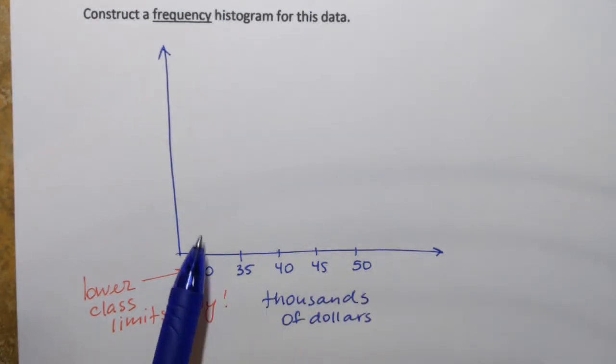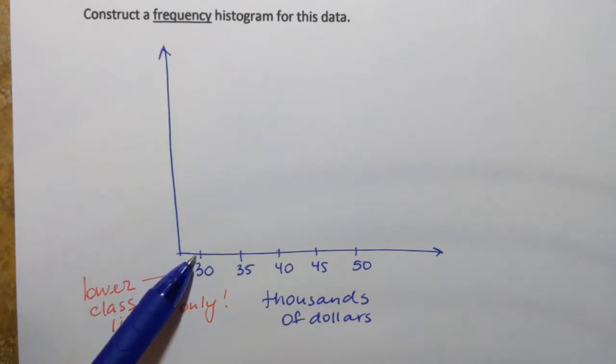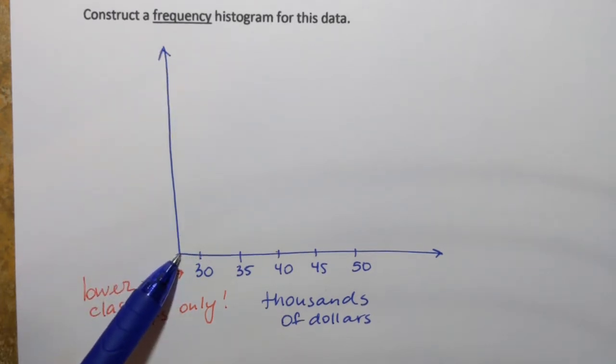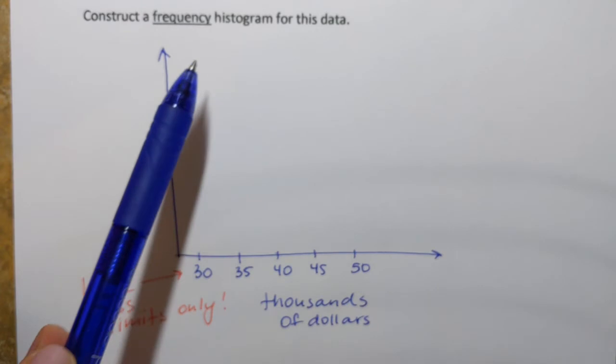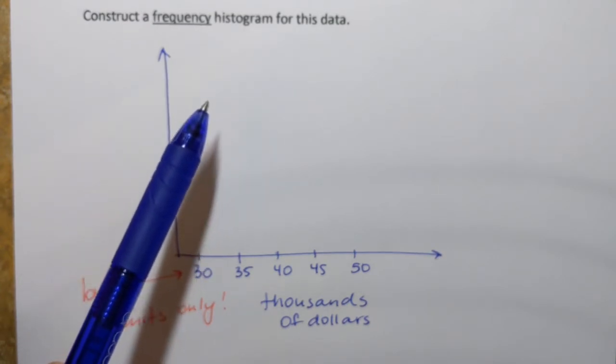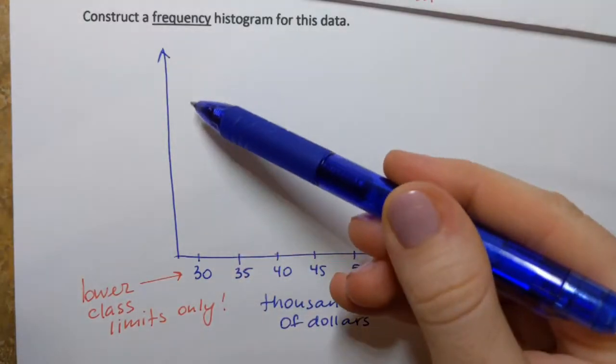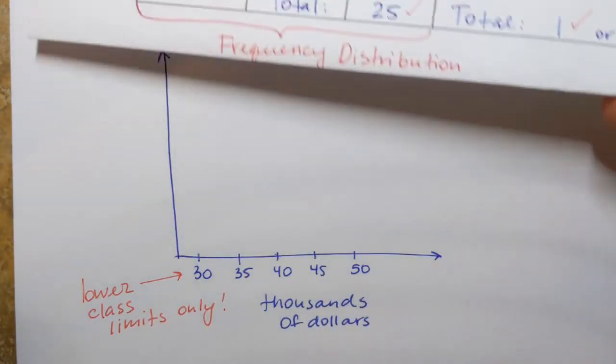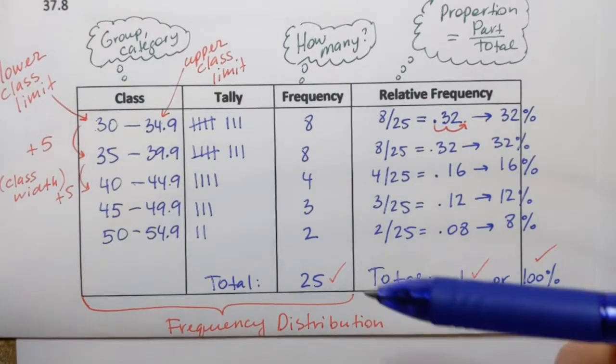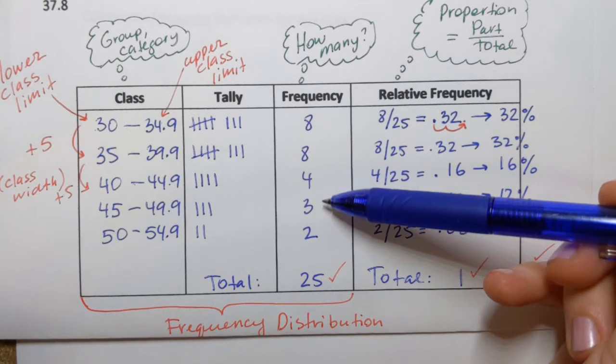Now let's move on to the vertical number line. The vertical axis or the vertical number line will always correspond to the frequency if we're constructing frequency histogram or relative frequency if we're constructing relative frequency histogram. So in our case this vertical axis should contain numbers corresponding to the frequencies and these are the frequencies in this case 8, 8, 4, 3, 2.